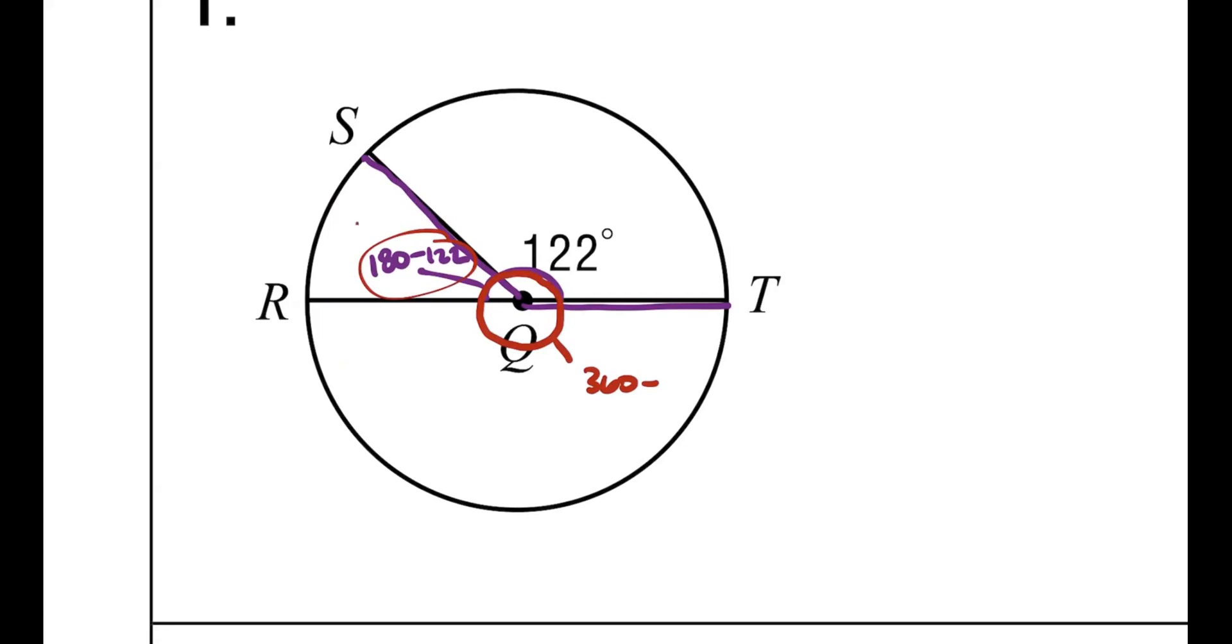So this would be 180 minus 122. And we also know the entire thing is 360, and we would subtract whatever this is, right? So what's 180 minus 122? That would be 58. Very good. So that would be 58. So from here to here would be 360 minus 122, which would be 238. Very good, 238 degrees. So now we look at this, and of course, from here to here would be 180, and from here to here would be 180, because those are semicircles.